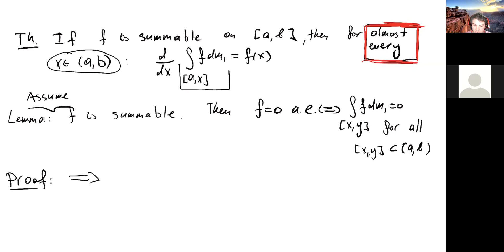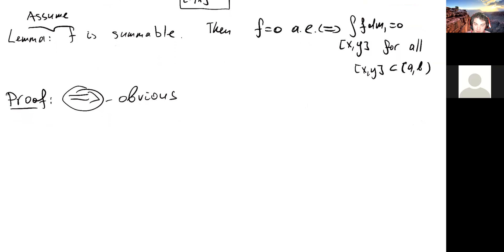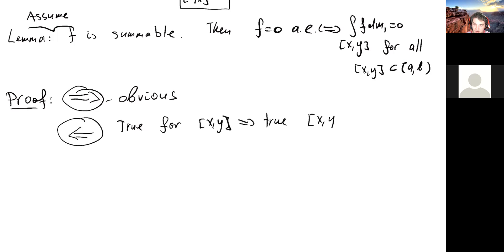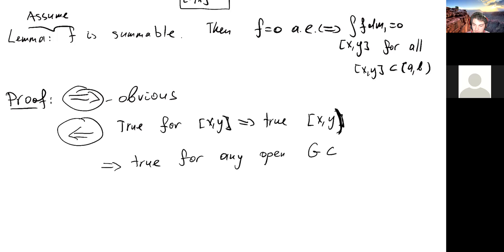One direction is obvious: if f is zero almost everywhere then all integrals are zero. The other way goes like this. First, because it's true for every closed interval, it's also true for any half-open interval. And because the integral is a measure, it's also true for any open set — because an open set is a disjoint union of half-open intervals. And if it's true for any open set, it's also true for any G-delta set.